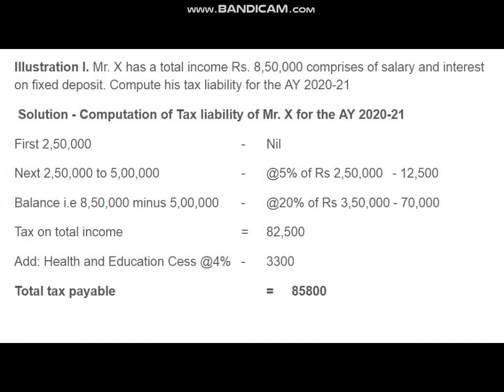Here is the question: Mr. X has a total income of rupees 8 lakh 50,000, comprising salary and interest on fixed deposit. Compute his tax liability for the assessment year 2020-21. So Mr. X's taxable income is 8 lakh 50,000 for the year and we have to compute the tax payable on this income for the assessment year 2020-21.